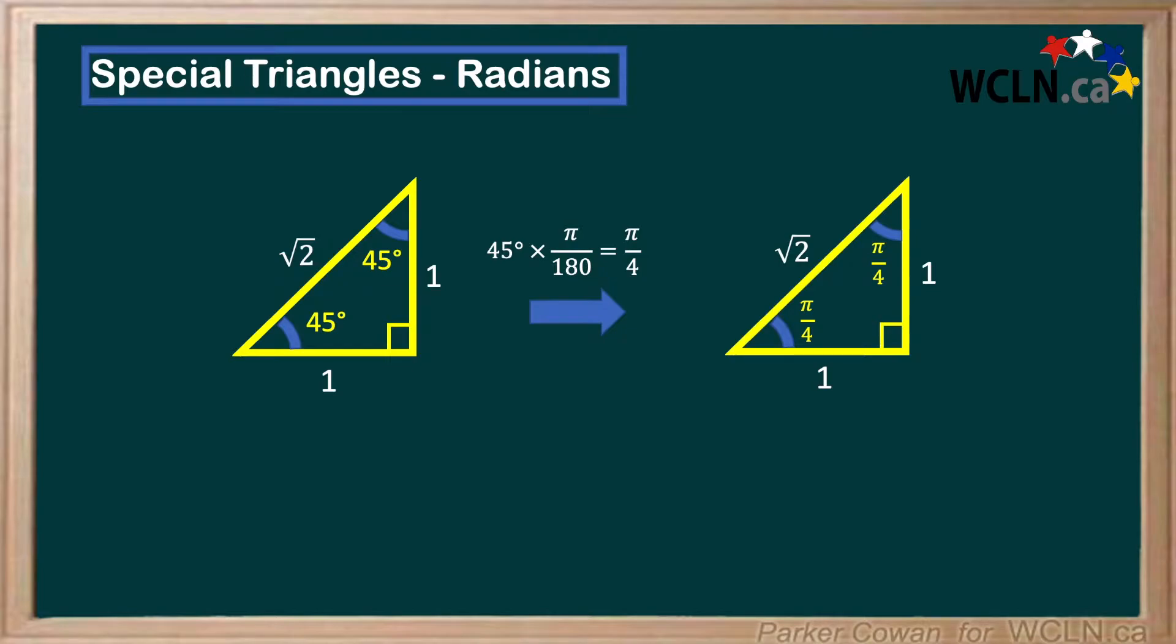We can evaluate sine, cos, and tan of this triangle without a calculator. So sine of pi over 4 is going to give us 1 over root 2. Cos of pi over 4 also equals 1 over root 2. And finally, tan of pi over 4 will give us 1 over 1, which is just 1.